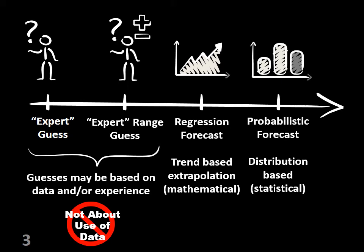Then we get into probabilistic forecasting. Rather than the mathematical process of the trend, it uses the distribution of history or the distribution of estimates and combines them in a way which projects forward, giving us not just the answer of a single result, but the possible values that a result could be as a distribution — what values are more common than others.